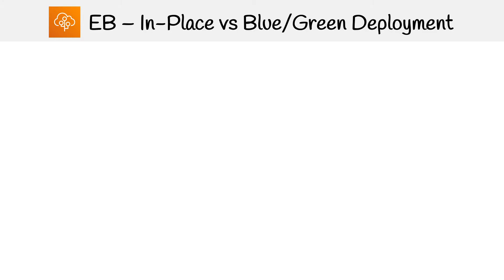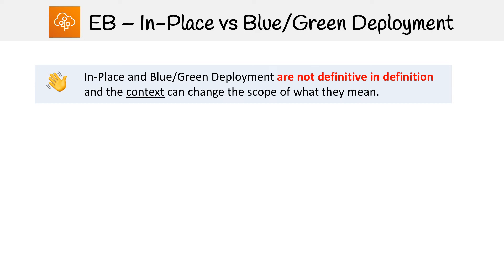Let's take a look at in-place versus blue-green deployment. These terms are confusing because they're not definitive in definition and the context can change the scope of what they mean. It's important to learn these not just for Elastic Beanstalk, but for DevOps in general. We're going to spend a little bit of time here making sure you really know this stuff inside and out.